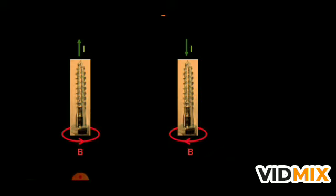To summarize: whenever there is a current in the upward direction and you move the screw in the forward direction, the direction of rotation of the screw while moving forward is the direction of the magnetic field.